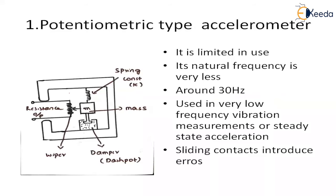The first accelerometer is the potentiometric accelerometer. The name is called 'potentiometric' because we are going to use a potentiometer here. It is one of the simplest forms of the accelerometer. The seismic mass is attached to the wiper arm of the potentiometer. This is the mass that is attached to the wiper arm. This is the accelerometer case.